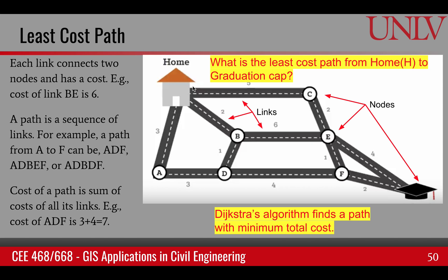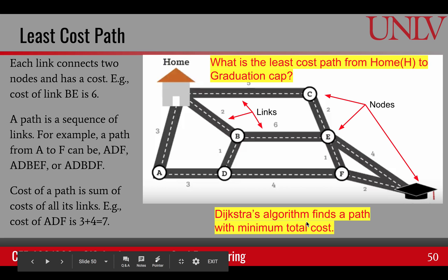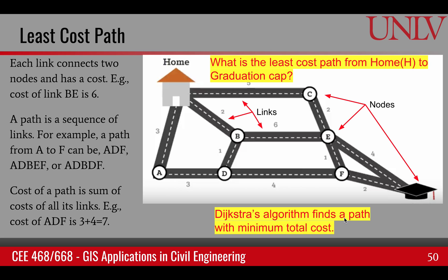For example, if the problem is to go from a home to the graduation cap, what path must we follow so that the sum of costs is minimum? For a small network you might solve it manually in five minutes, but for a network covering a whole city things become complicated and you need automatic algorithms that can be programmed in a computer. The algorithm I'm going to talk about is called Dijkstra's algorithm to find the minimum cost of a path.